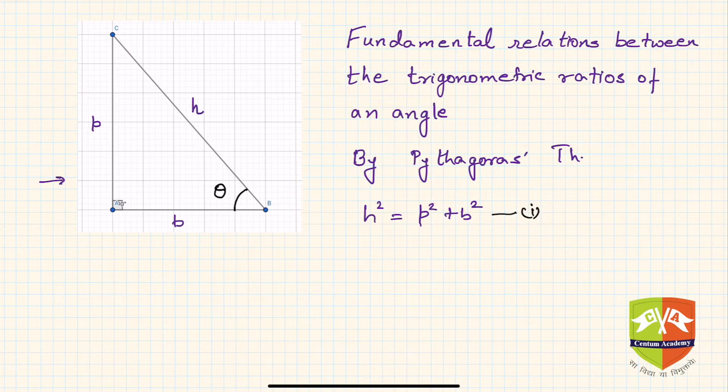We have learned that sine squared theta plus cosine squared theta is equal to one, irrespective of the value of theta. This is valid for every value of theta, hence it is called a trigonometric identity as well.